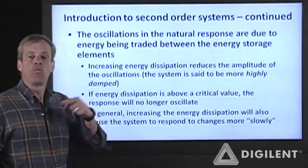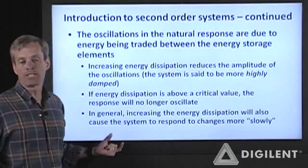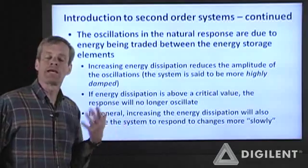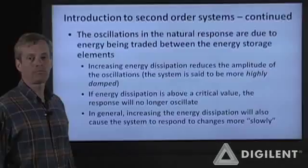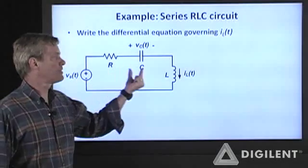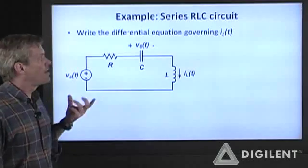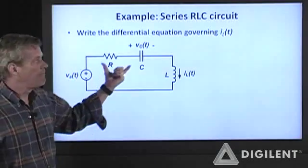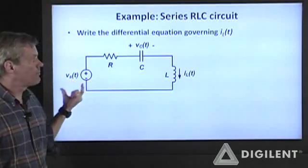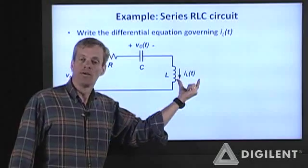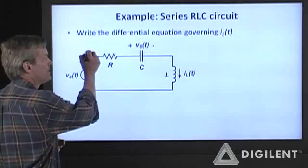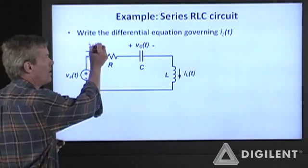Done with my background information, we'll look at a couple of simple electrical circuits that have second order governing differential equations. The first circuit I want to look at consists of a series combination of a resistor, a capacitor, and an inductor. For fairly obvious reasons, this is called a series RLC circuit. What I want to do is write the differential equation that governs the current through the inductor — and since these are all in series, that current is the same for all elements.